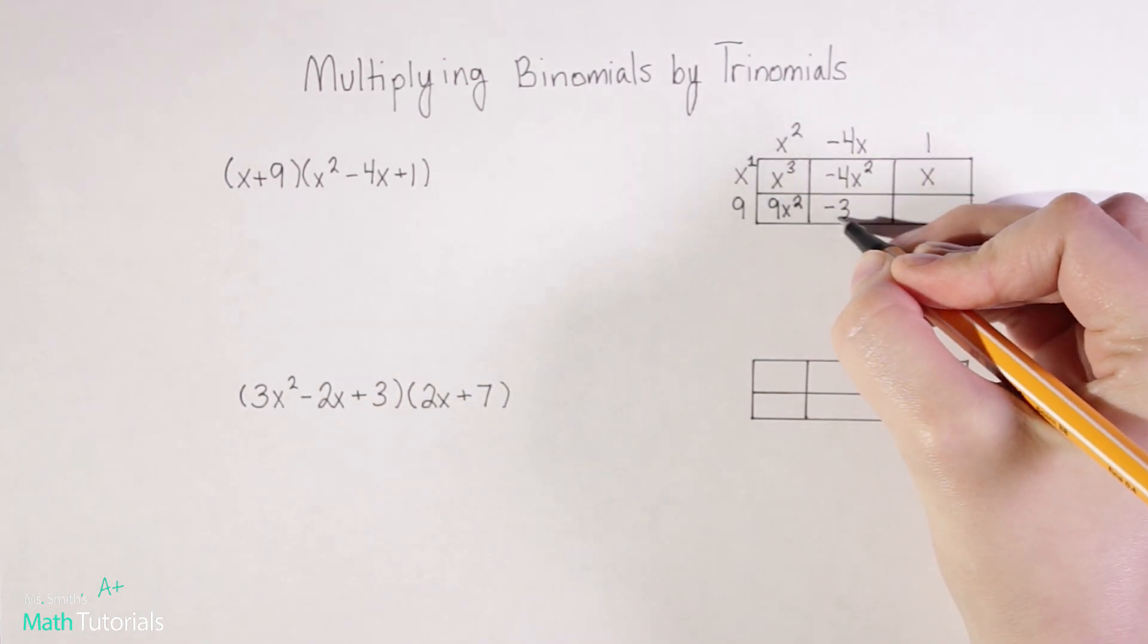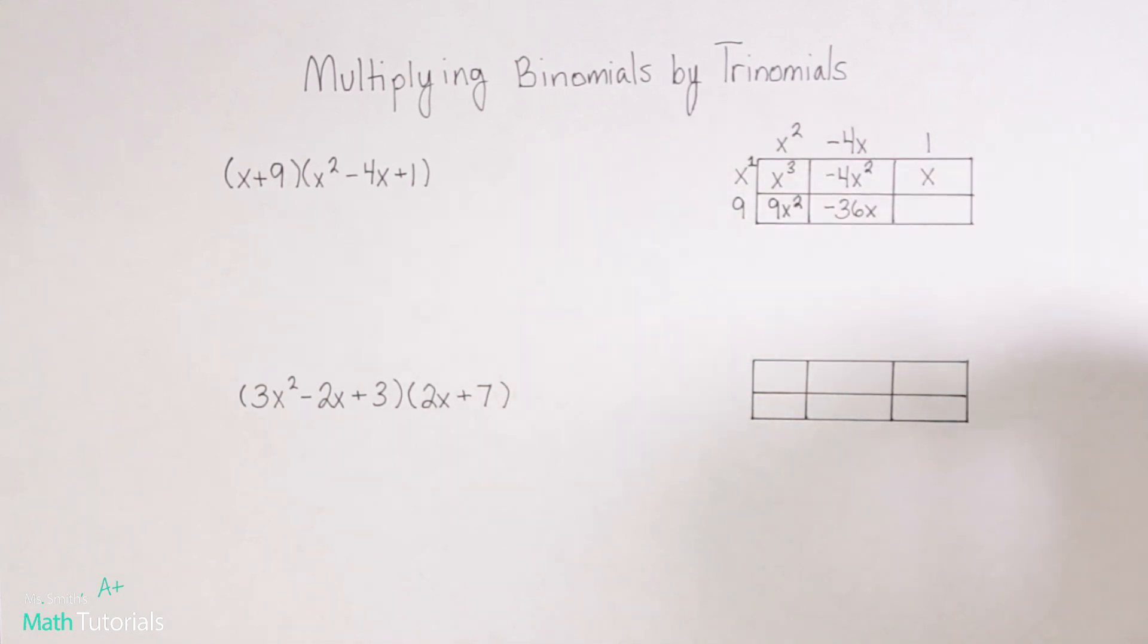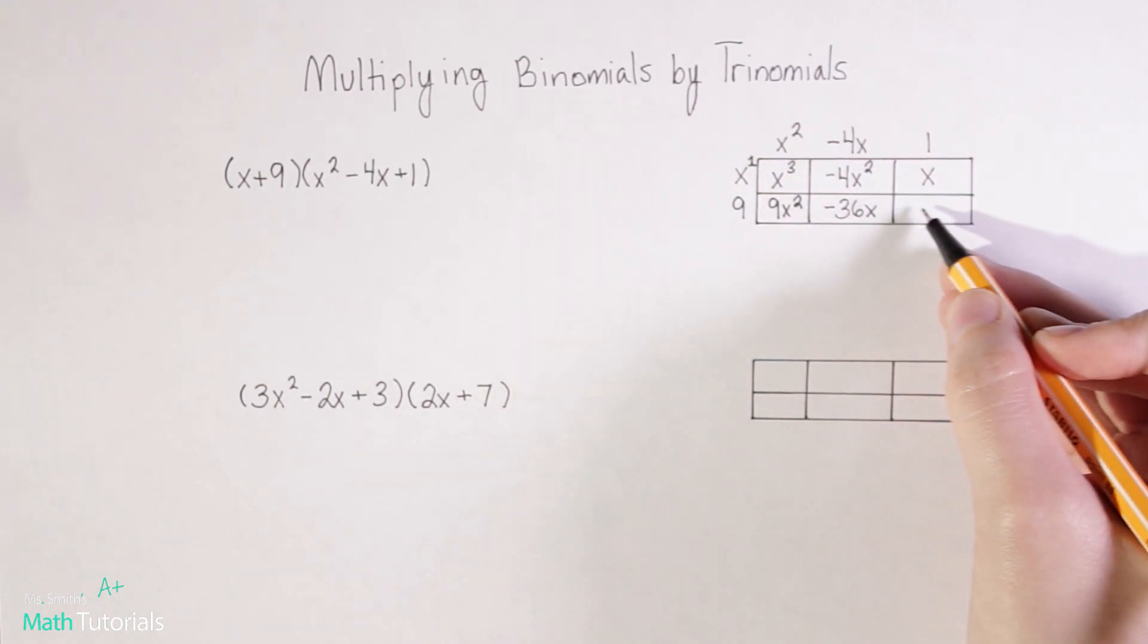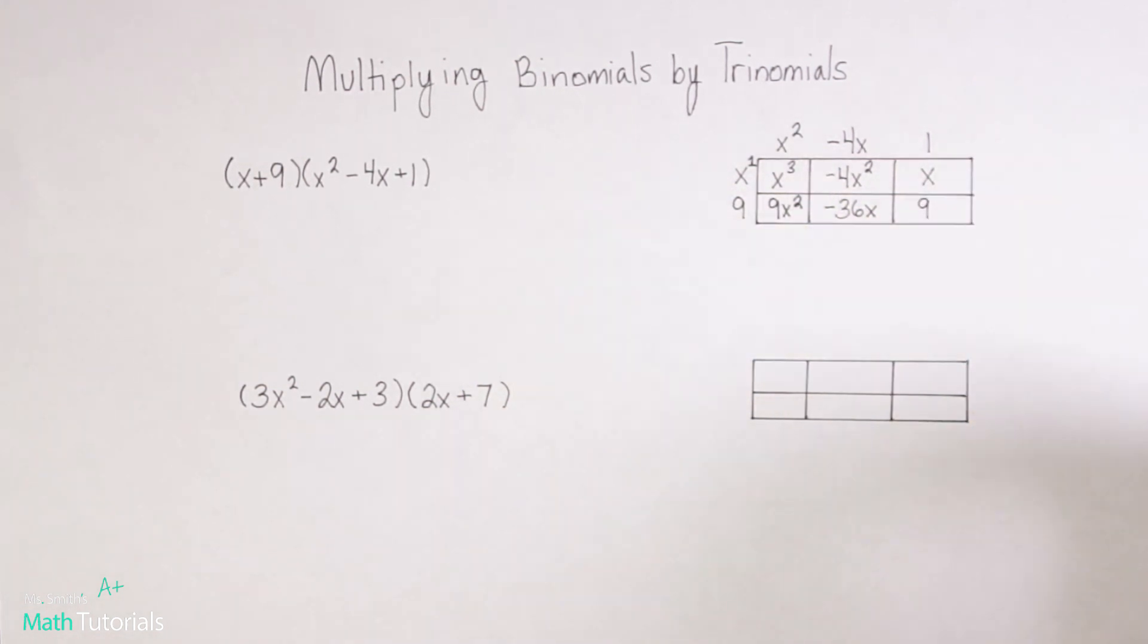And nine times negative four x, which would be negative 36 x. And nine times one, easy enough, nine.